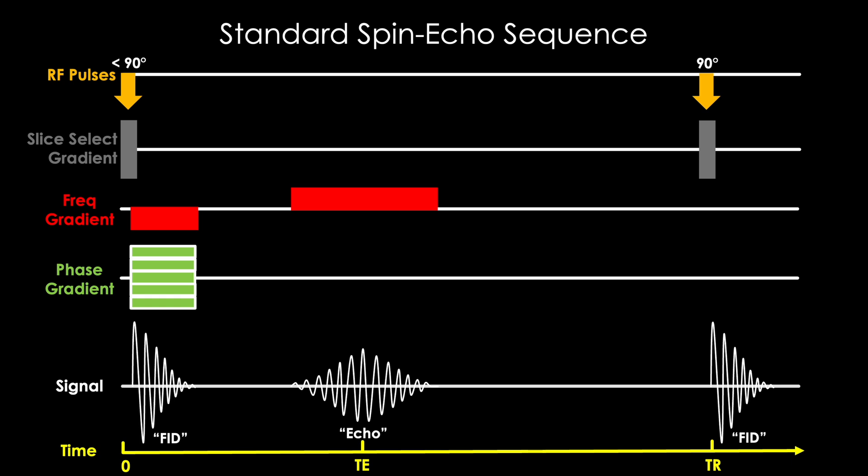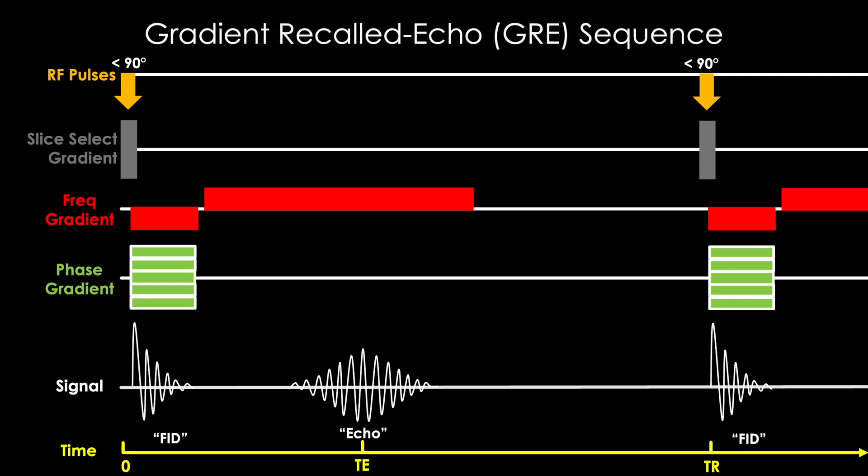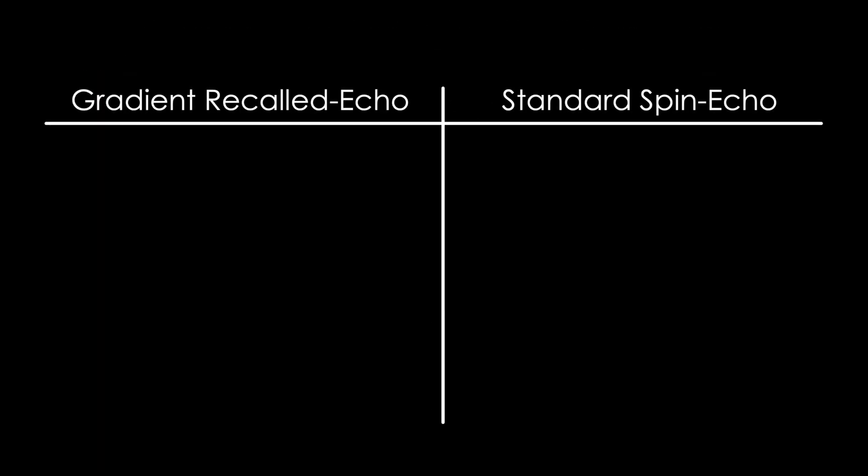We apply a reverse frequency encoding gradient here, at the same time as our phase encoding gradient, which quickly dephases our free induction decay signal. And then, rapidly reversing our frequency encoding gradient back to its normal direction, allowing our protons to rephase and our signal to re-emerge as an echo. So this, folks, is called the gradient recalled echo, or GRE for short. And for once it's a pretty good name, right? It perfectly describes what we're doing here.